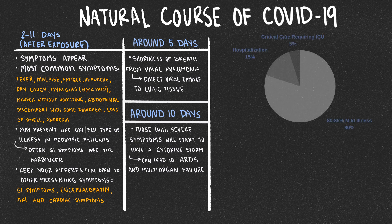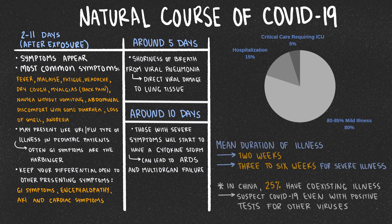About 80% of patients will have mild symptoms and can be managed at home. However, up to 15% may require hospitalization, and about 5% could require critical care. The mean duration of illness is about two weeks, but those with severe COVID-19 can have three to six weeks of illness. Notably, in some studies up to 25% had a concomitant disease — so a positive flu swab or respiratory viral panel does not rule out COVID-19.